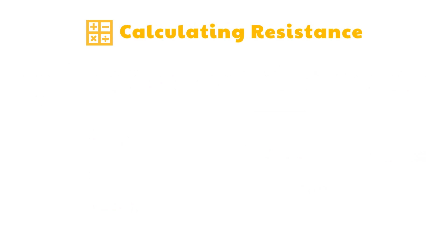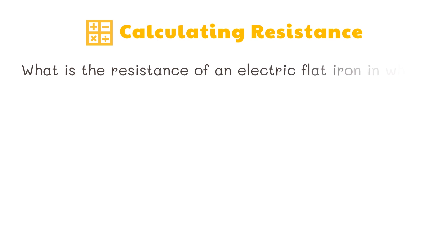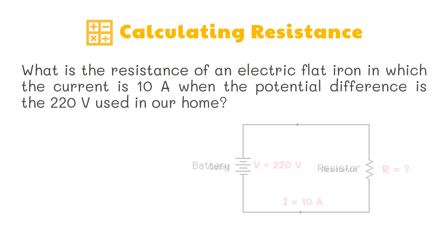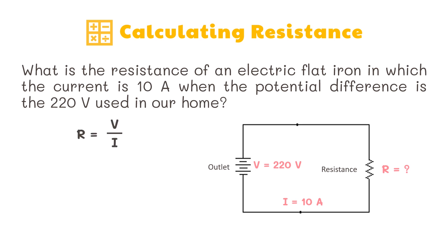How about we try solving for resistance? What is the resistance of an electric flat iron in which the current is 10 amperes when the potential difference is the 220 volts used in our home? We have the formula resistance equals voltage divided by current. The given voltage is 220 volts and current of 10 amperes. So 220 volts divided by 10 amperes equals 22 ohms.